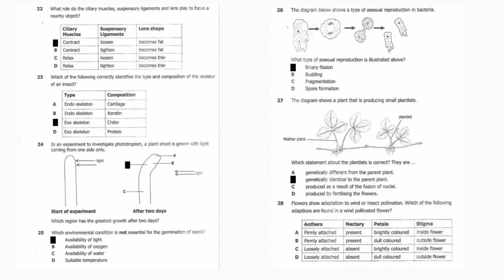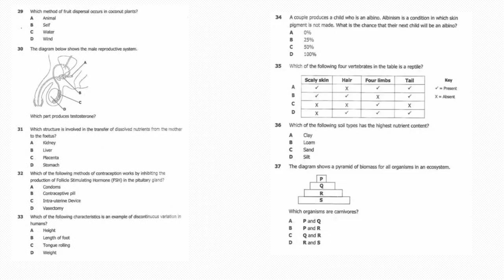Twenty-eight: Flowers show adaptation to wind and insect pollination. Which of the following adaptations are found in a wind-pollinated flower? Answer is D: anthers loosely attached, nectary absent, petals dark colored, stigma outside flower. Twenty-nine: Which method of fruit dispersal occurs in coconut plants? The answer is A, animal dispersal. Question 30: The diagram below shows the male reproductive system. Which part produces testosterone? That's D, the testes.